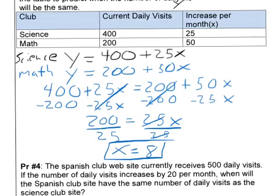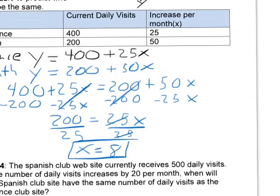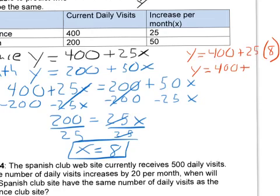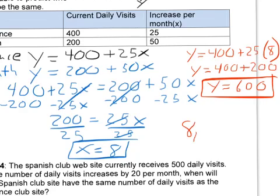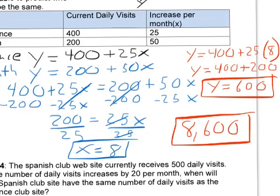Now if I want to know what my Y is, how many visits I'll have, I can plug this back into any one of these equations. So let's do that off on the side here. I'll do it in red. And I'll just pick this top one. So Y equals 400 plus 25 times 8 now instead of X. So Y equals 400 plus, and 25 times 8 is 200. So Y would equal 600. So that would be my solution for this.